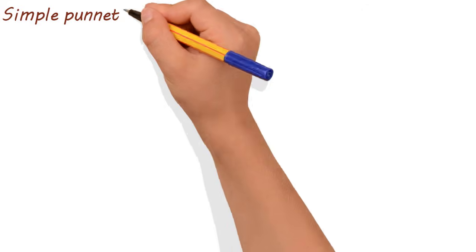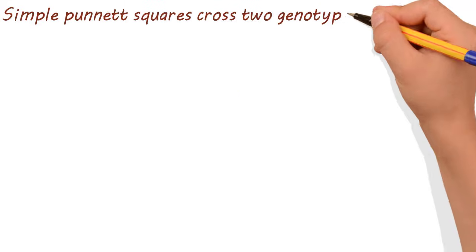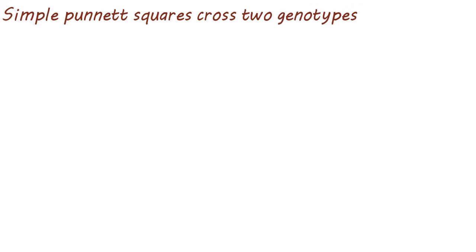For the simplest of Punnett squares, you'll cross two genotypes. These parent genotypes will be for the same gene, but may or may not contain different alleles.